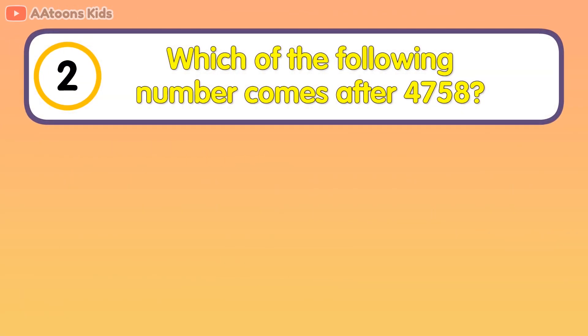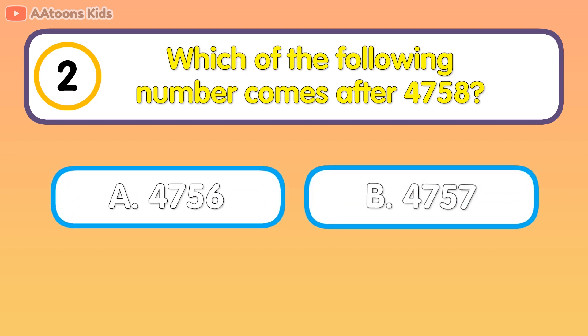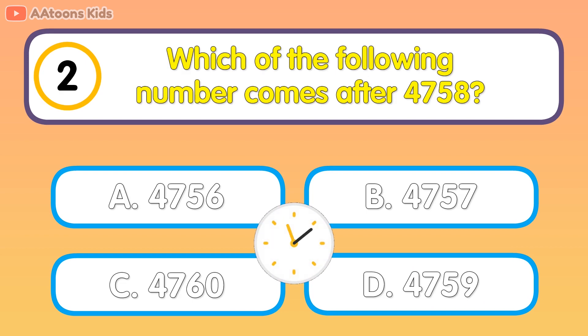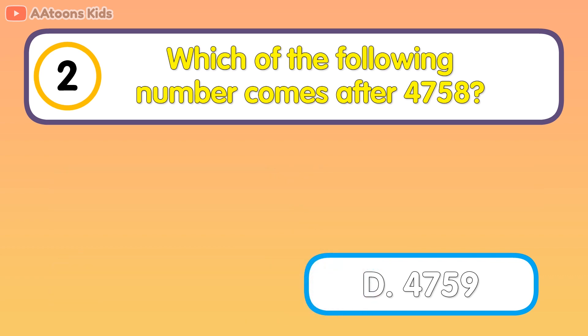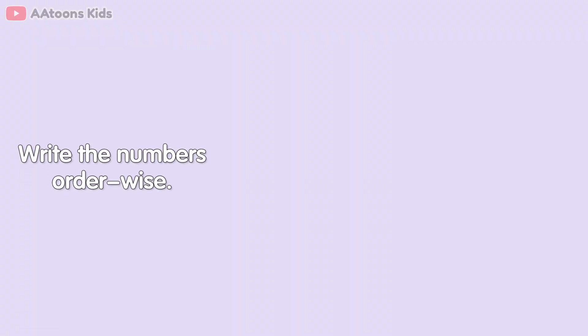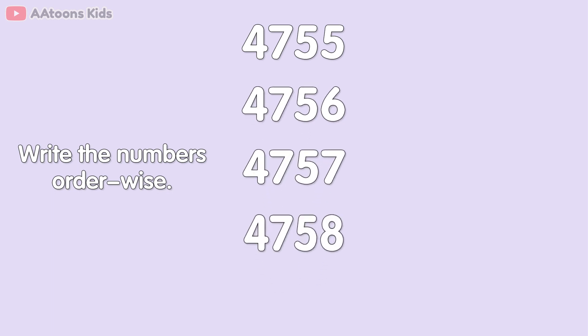Which of the following number comes after 4758? 4759. First you write the numbers in order: 4755, 4756, 4757, 4758, 4759. 4759 comes after 4758.